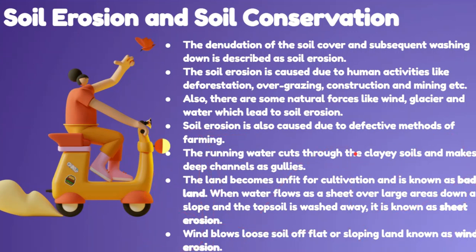Running water cuts through clay soil and makes deep channels called gullies. The land becomes unfit for cultivation and is also known as bad land. When water flows as a sheet over a large area down a slope and the top soil is washed away, it is known as sheet erosion. Wind blowing loose soil off flat or sloping land is known as wind erosion.